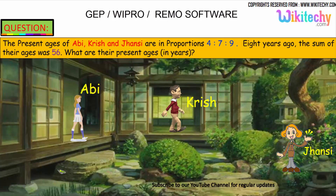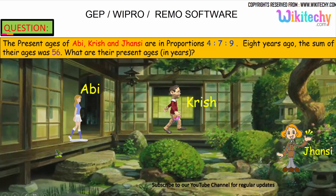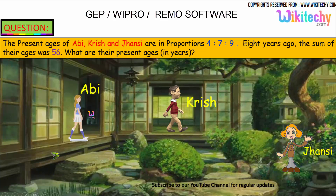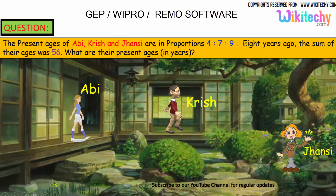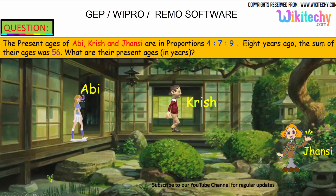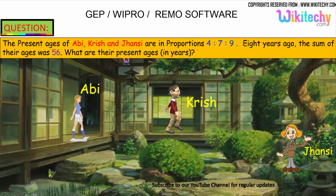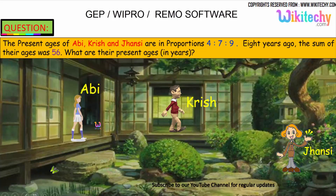Let's move on to the next problem. Abhi, Krish, and Jansi are in the proportion of 4 is to 7 is to 9. Eight years ago, the sum of their ages was 56. What are the present ages?